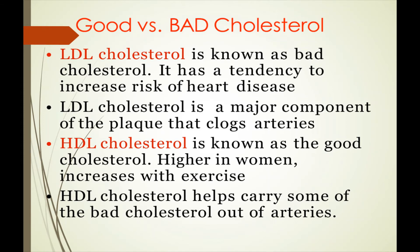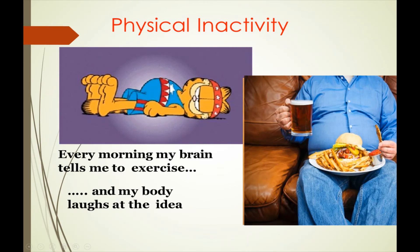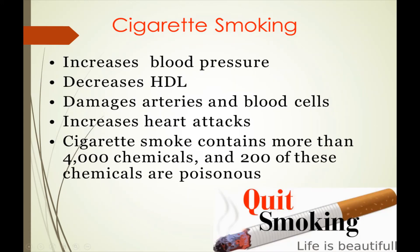HDL helps carry some of the bad cholesterol out of the arteries. Body fat distribution also matters: in a pear-shaped body, fat is deposited at the center, while in an apple-shaped body, fat stores around the abdomen, chest, and surrounding internal organs — fat is deposited everywhere. Physical inactivity is also one of the major risk factors.